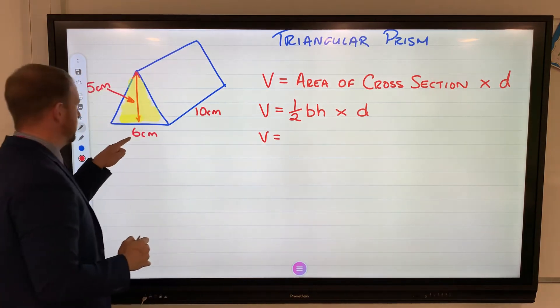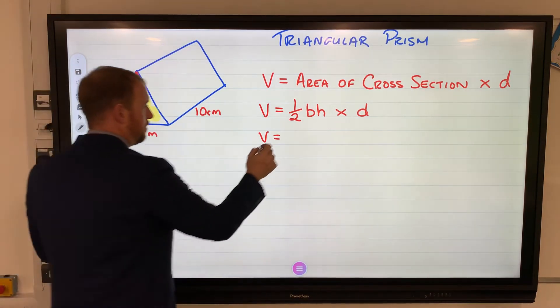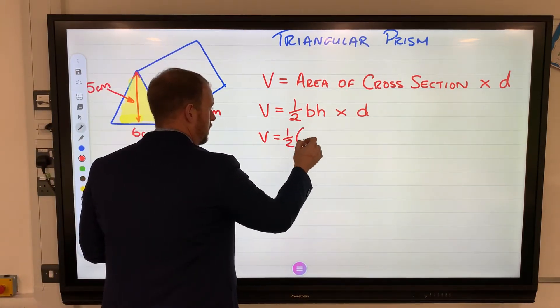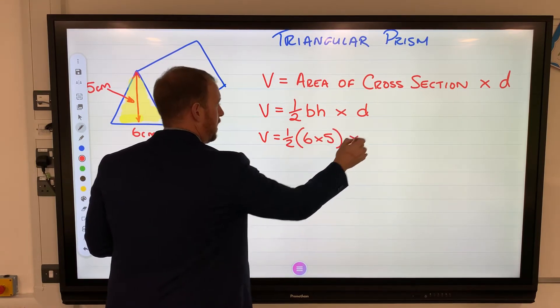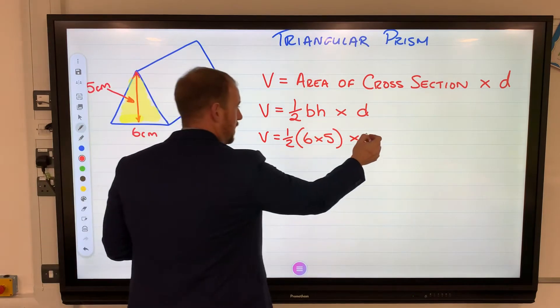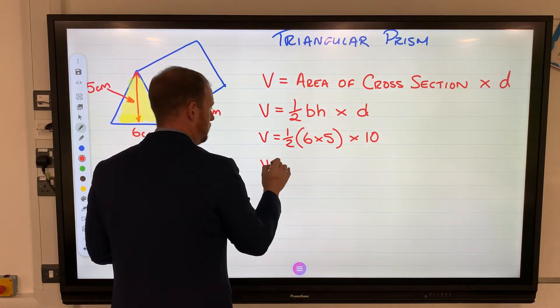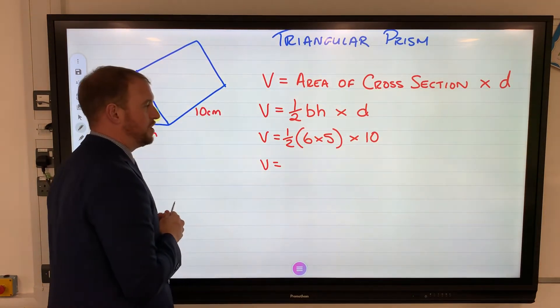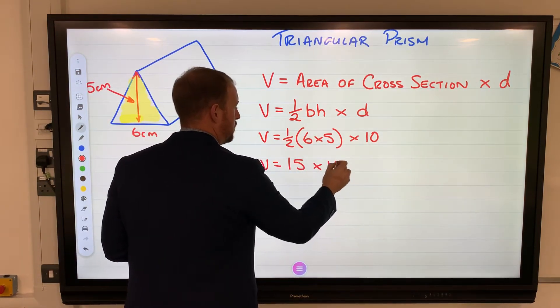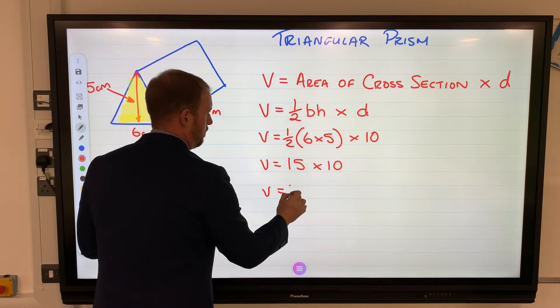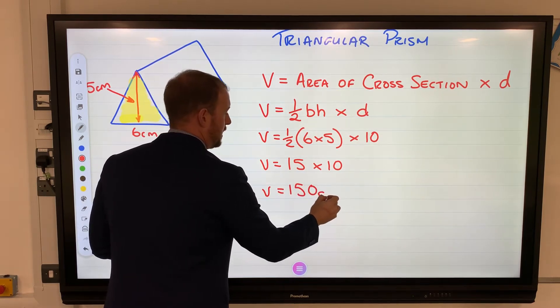Base is 6, height is 5, so half of 6 times 5, and then times your answer by 10. Well, 6 times 5 is 30, half of 30 is 15, and then times that by the depth which is 10. 150 centimeters cubed.